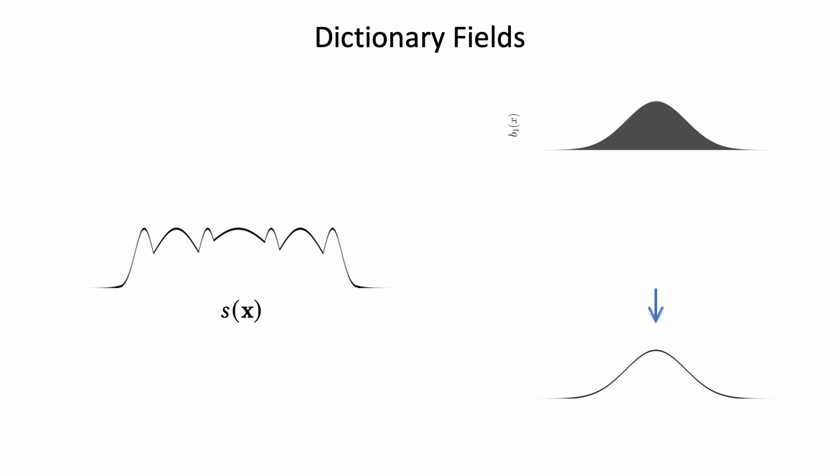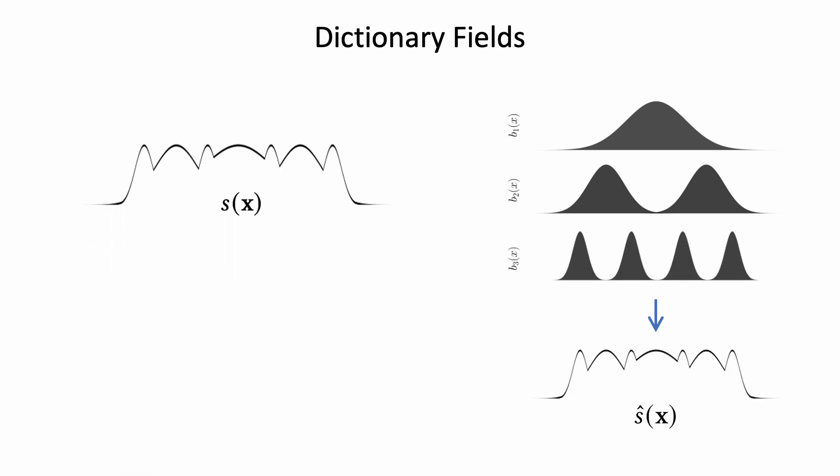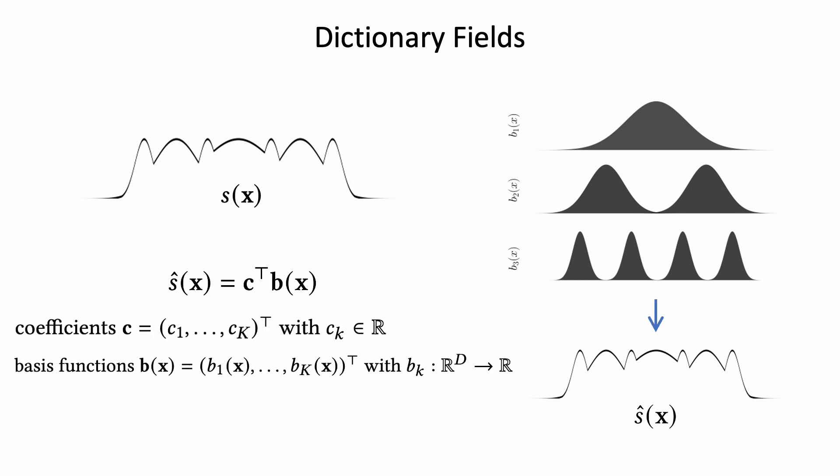We decompose S into a set of coefficients, C = {C₁ to Cₖ}, and basis functions B(x) = {B₁(x) to Bₖ(x)}. Note that we denote Ŝ(x) as the approximation.